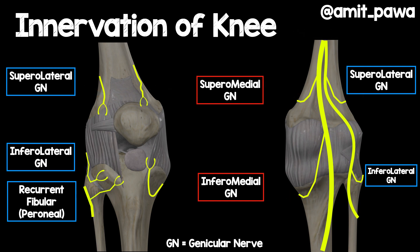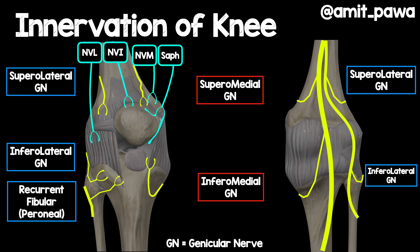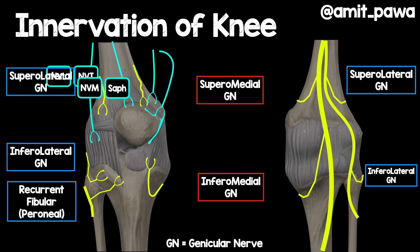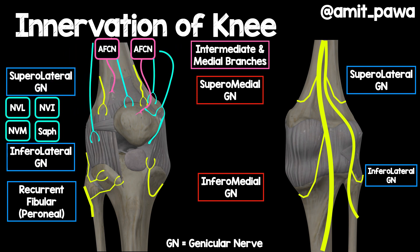Let's add in the saphenous nerve and the nerve to vastus medialis — nerves traditionally blocked when performing a femoral triangle or adductor canal block. The femoral nerve also innervates the vastus intermedius and vastus lateralis muscles, which are also relevant for knee arthroplasty analgesia. We can now superimpose the anterior femoral cutaneous nerves and see this complex jigsaw puzzle that contributes to innervation of the anterior aspect of the knee.